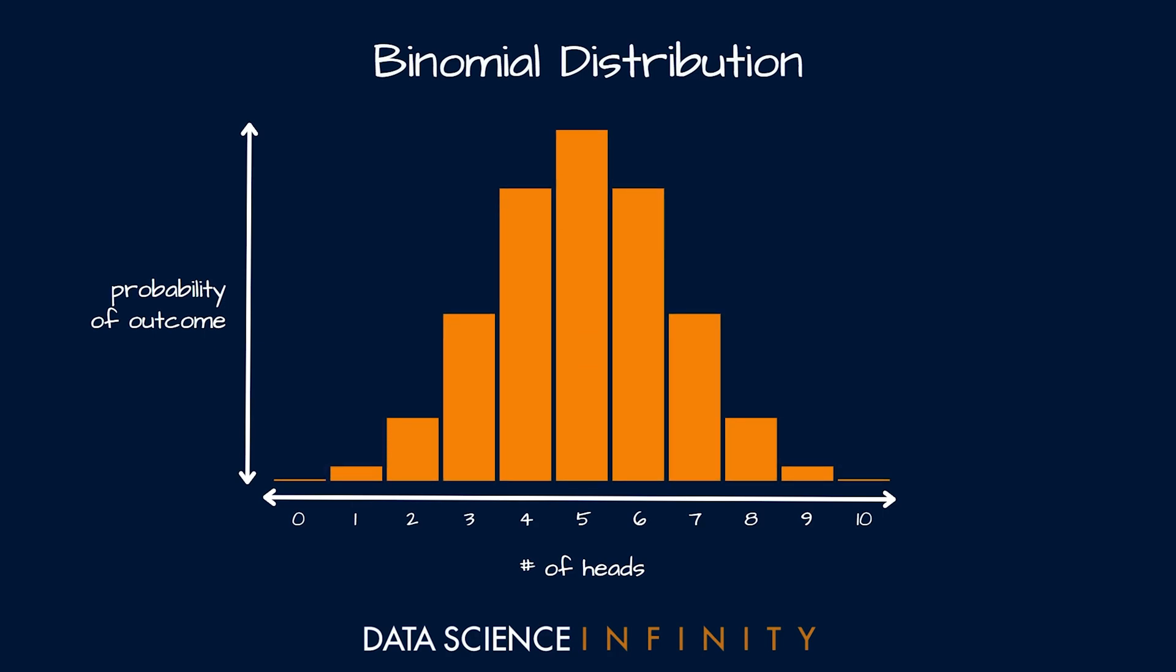As you can see, in the vast majority of cases from our 10 flips we would get either 4, 5, or 6 heads. Less frequently than that we would get either 3 or 7 heads from our 10 flips, and even rarer than that we would see a total of 2 or less or 8 or more heads from our sets of 10 coin flips. So that is the binomial distribution, very useful to know as it can help us understand the probability of a binary outcome in an experiment that we run multiple times.